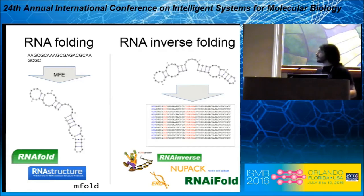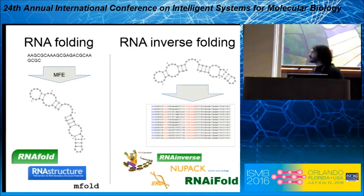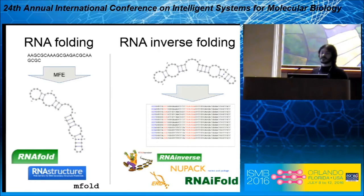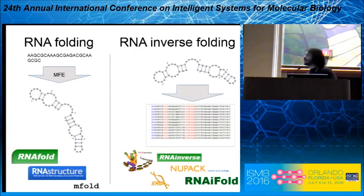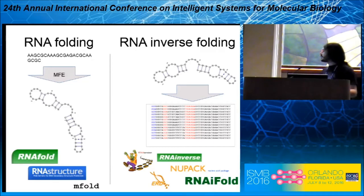We can use secondary structure — the sum of canonical base pairs — as a scaffold for the tertiary structure, making it a good predictor for function. There are several computational methods for RNA folding: given a sequence, find the minimum free energy structure. Many algorithms implement this with slight variations and it can be solved in cubic time. We are most focused on RNA inverse folding, the opposite problem: given a target structure, find the sequence whose minimum free energy structure is that target structure. This problem has been claimed to be NP-complete.